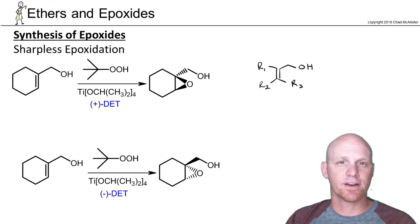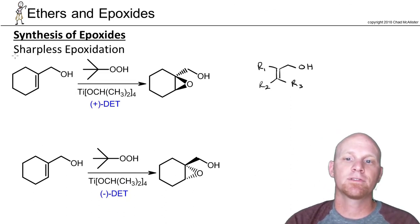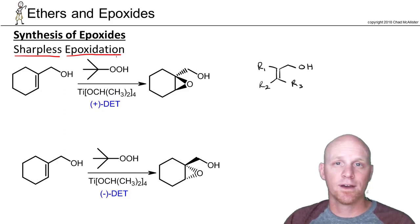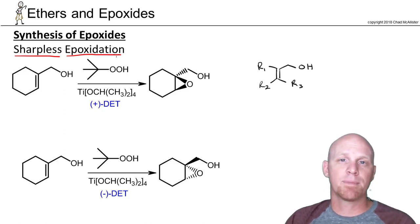Now the last way we're going to learn to make an epoxide here is what's called the Sharpless Epoxidation. And this is kind of an important one as well as a rather unique one. Most of the time if you form an epoxide that is chiral you're going to form both versions of it. The last two reactions we look at that's exactly what they do. But with the Sharpless Epoxidation you can form enantiomerically pure versions of chiral epoxides.